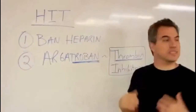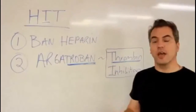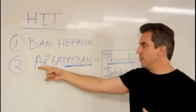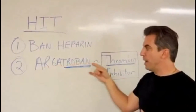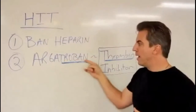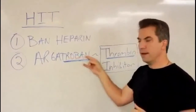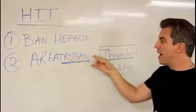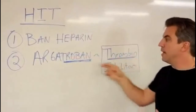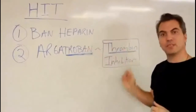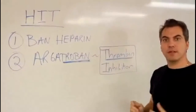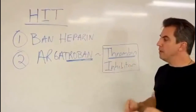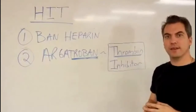Now, how does it work? What's the mechanism of action? Well, look at the name: argatroban. 'Troban' — thrombin. It inhibits thrombin. That's how it works. It inhibits thrombin, so you'll be anticoagulated.